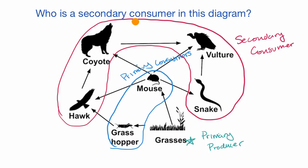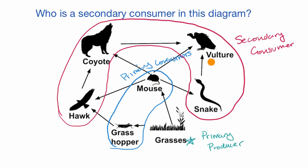And we're done. Who is a secondary consumer in this diagram? The coyote is a secondary consumer, the hawk is also a secondary consumer, the vulture is a secondary consumer, and so is the snake. That's okay even in a situation where some secondary consumers eat other secondary consumers — a coyote might eat a hawk, or a vulture might eat a snake, which might eat a mouse, which eats the grass. But any of these could be considered secondary consumers.